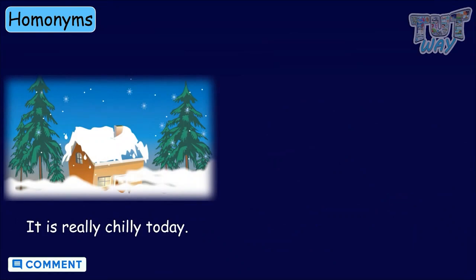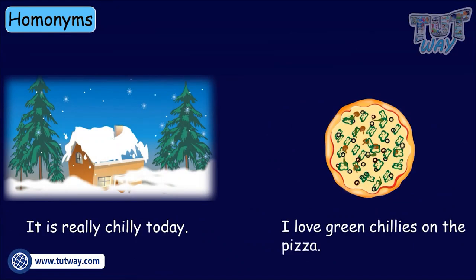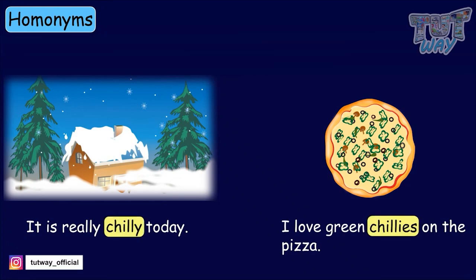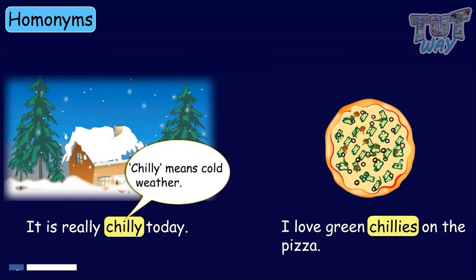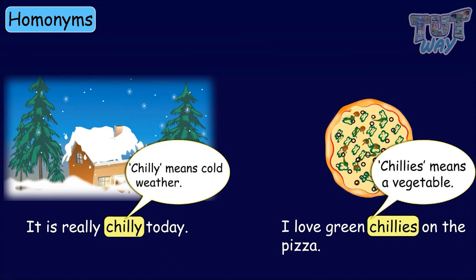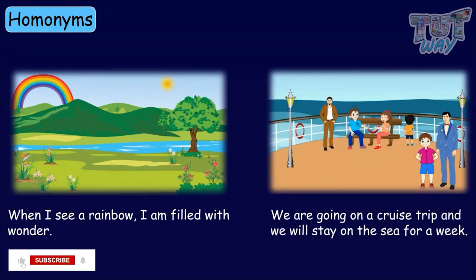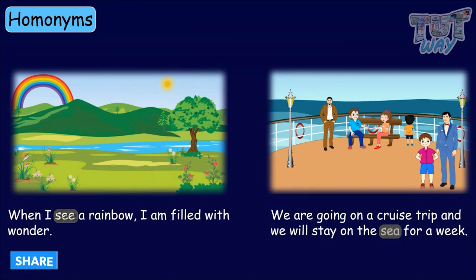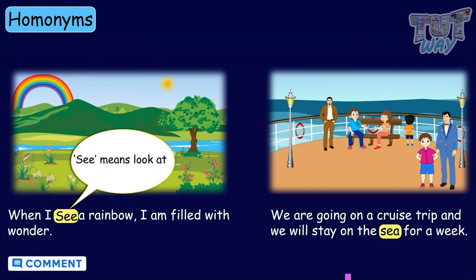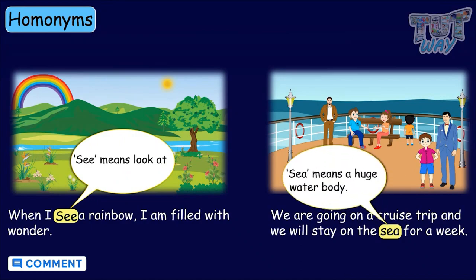It is really chilly today. I love green chilies on the pizza. Chilly and chili have the same pronunciation, but the first one means cold weather and the other refers to a vegetable. When I see a rainbow, I am filled with wonder. We are going on a cruise trip and will stay on the sea for a week. See and sea sound similar — see means to look at, and sea refers to the huge water body.